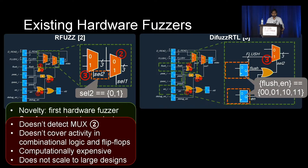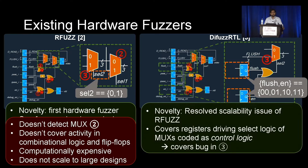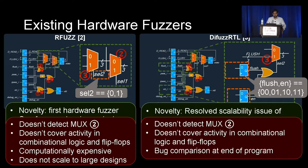DifuzzRTL is an improved version of rfuzzer that eliminates the scalability issues and is used to fuzz processor designs. It covers the registers driving the select logic of muxes — for mux 3, flush and enable are the registers driving the select logic, and DifuzzRTL checks if these registers take all possible combinations of values: 0,0; 0,1; 1,0; and 1,1. This allows detection of bug 3. However, DifuzzRTL also doesn't detect mux 2 and doesn't cover activity in combinational logic and flip-flops, so bugs 1 and 2 are not directly covered. Also, the bug comparison happens at the end of the program, which is not very efficient.